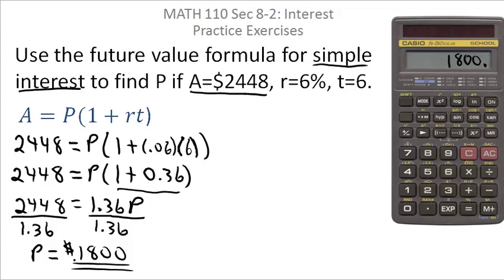I would have had to put in $1800 in the beginning. So $1800 grows to $2448 after six years with a 6% simple interest rate.